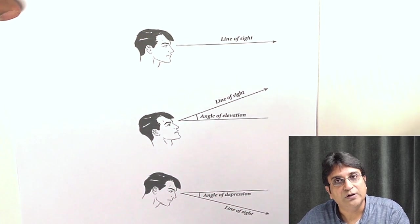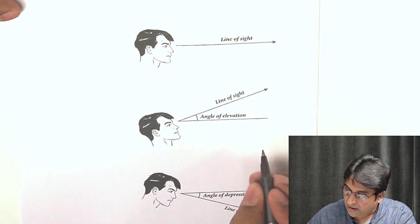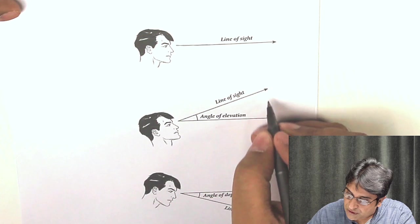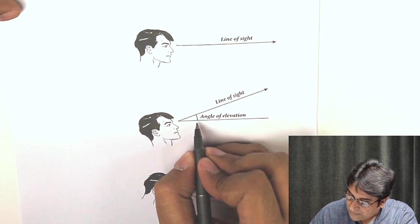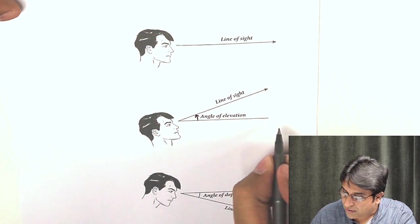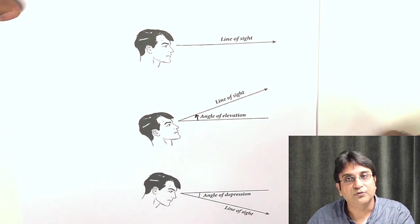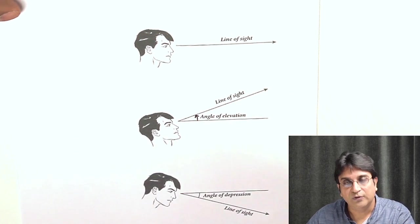The next concept to understand is the angle of elevation. So let's say you're here and you're looking at something which is much higher than you, say the top of a building or something. Then this angle between the horizontal and the line of sight is called the angle of elevation.